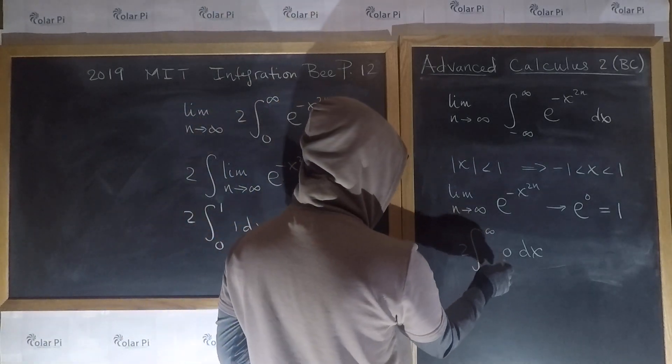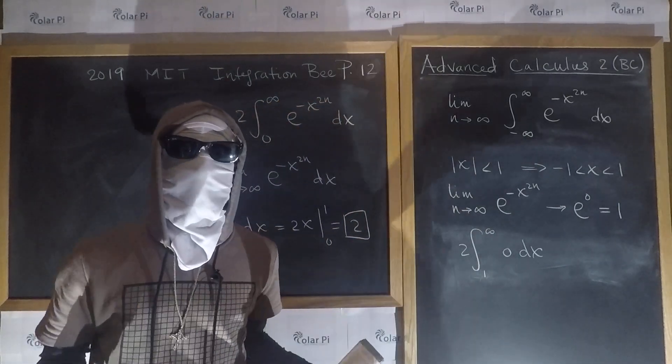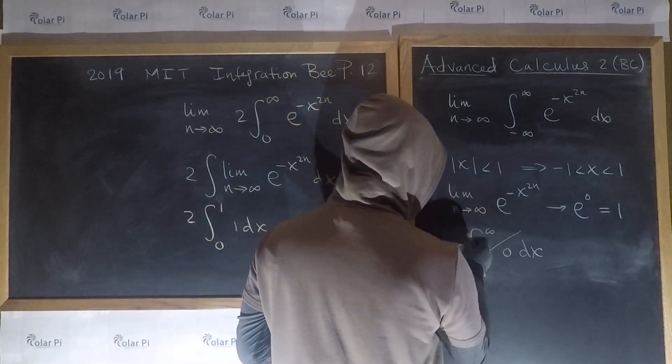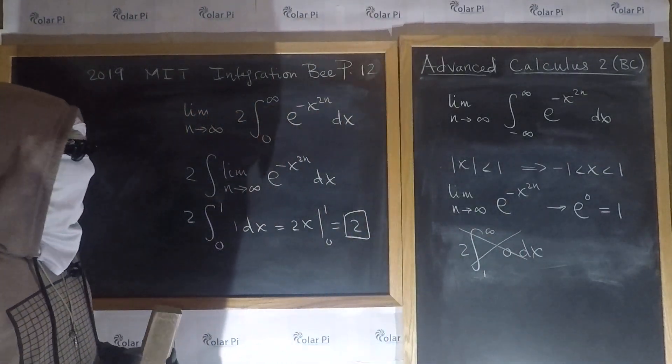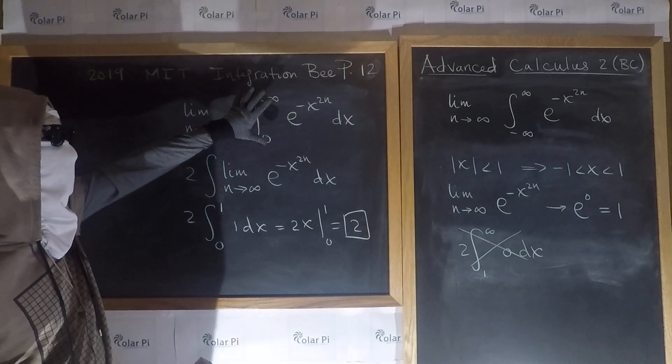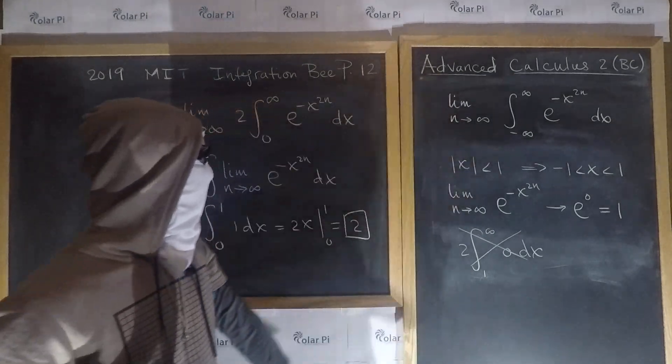But wait, the antiderivative of 0 is possibly 0, but also any other constant. So this here, we can't say the value of, and therefore, for x's outside of this interval, we don't have a value for this integral.